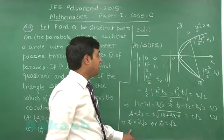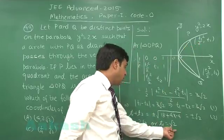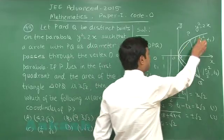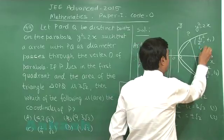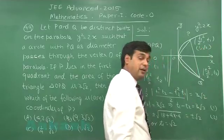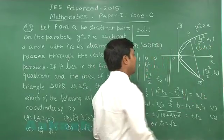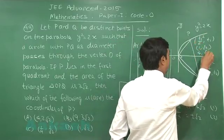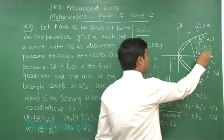Substituting this value of t1 in point P, we can say when root 2 is substituted this gives me 2 by 2 that is 1 comma root 2. And when 2 root 2 is substituted, it is 8 by 2 that is 4 comma 2 root 2.